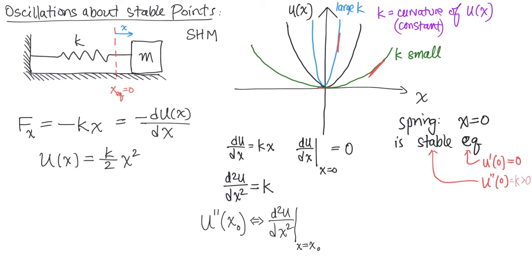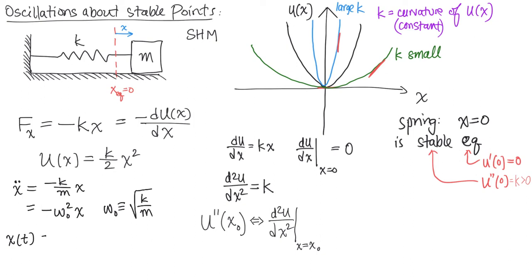What else can we learn about the system from this value K, from this curvature? One other thing we know about a mass on a spring is the equation of motion: the acceleration is given by minus K over m times the displacement. We can write a solution by defining omega-naught as the square root of K over m. With that definition, we can write very nicely that the position is a periodic function whose angular frequency depends on K, the curvature of the potential.